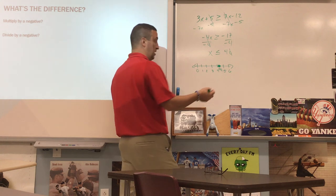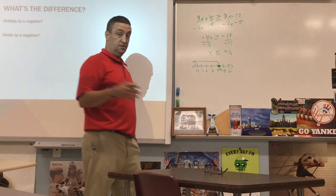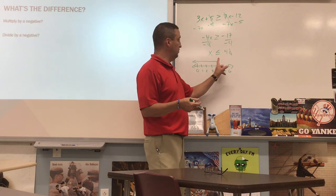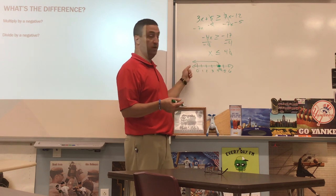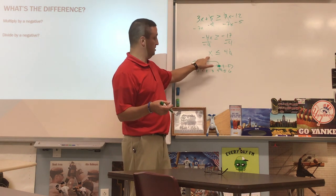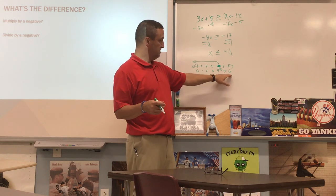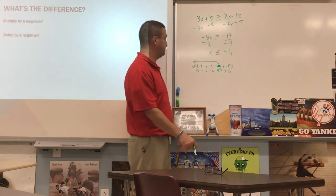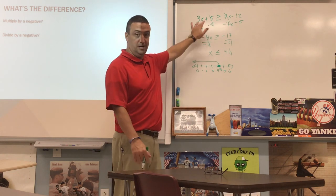Then I have to shade or point in the direction that the inequality is true. Every number to the left of 4 and 1 fourth is less than 4 and 1 fourth, so I point where it's true. If you're not sure, plug a point in. Is zero less than or equal to 4 and 1 fourth? Yes — so I should be pointing toward zero, and I am. What about six? Is six less than 4 and 1 fourth? No, so we're not pointing towards six. You can plug it in here or into the original equation — it should work for both.